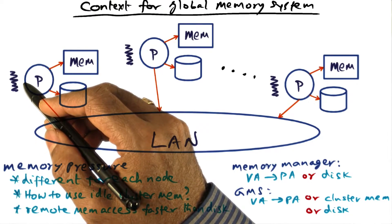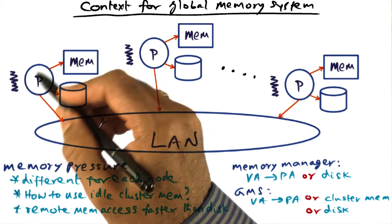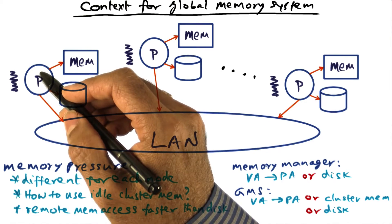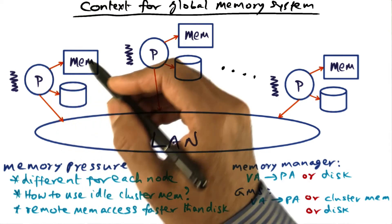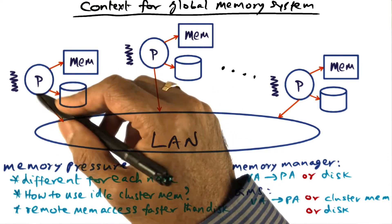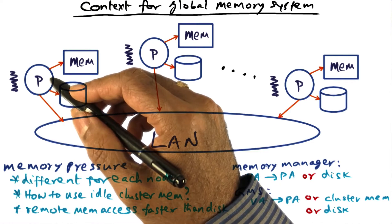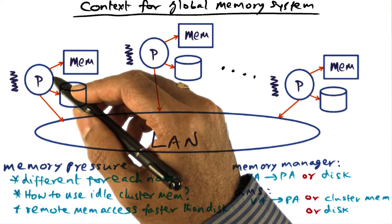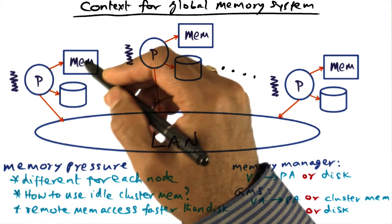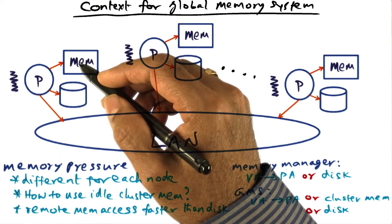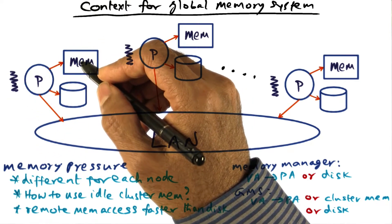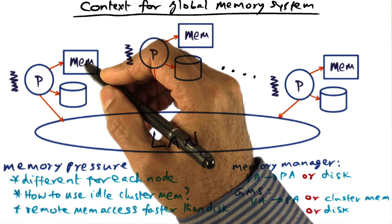Typically, the virtual address space of a process running on a processor — your desktop, your PC, your laptop, and so on — is much larger than the physical memory that is allocated for a particular process. The role of the virtual memory manager in the operating system is to give the illusion to the process that all of its virtual address space is contained in physical memory. But in fact, only a portion of the virtual address space is really in the physical memory, and that's called the working set of the process.